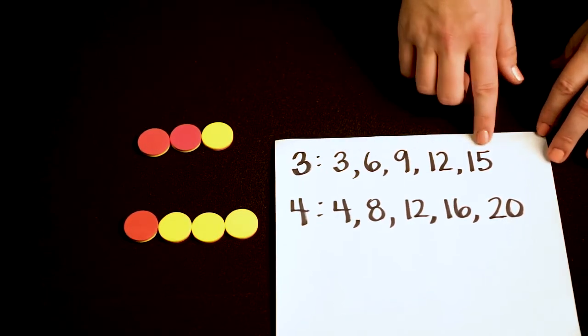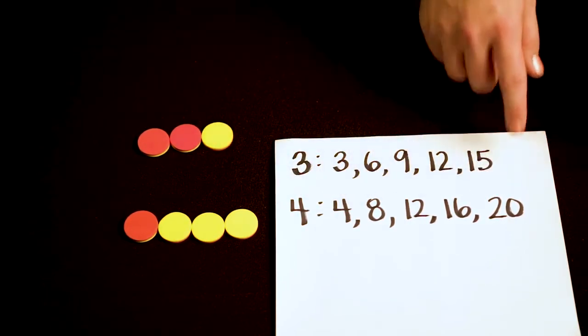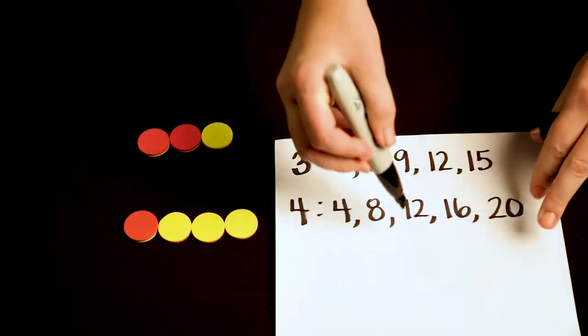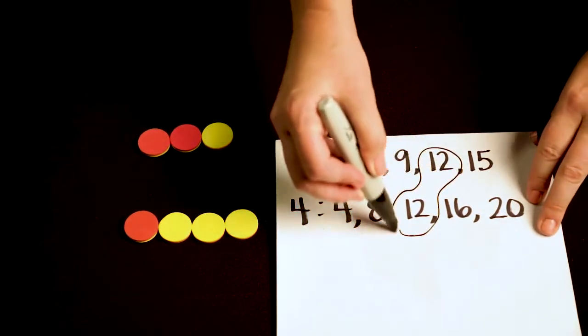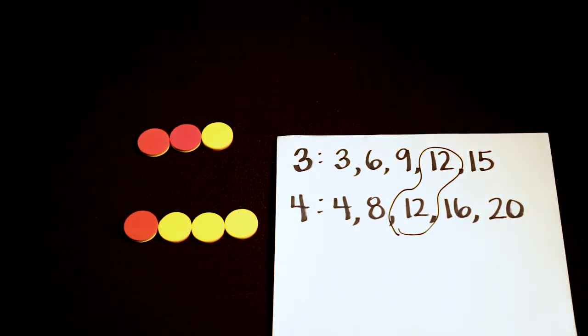So here are my multiples of 3 and here are the multiples of 4. The least common multiple for these fractions is 12. So I'll go ahead and circle it just like that.